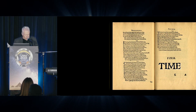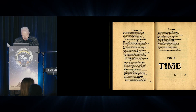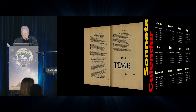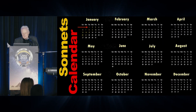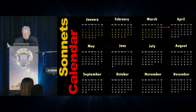And so it occurred to me, perhaps, they are a calendar. I overlaid them over a 365-day calendar so that sonnet 1 is January 1 and February 1 is sonnet 32, etc., etc.